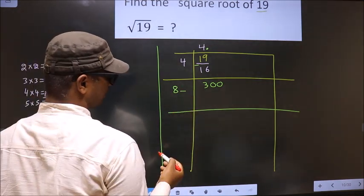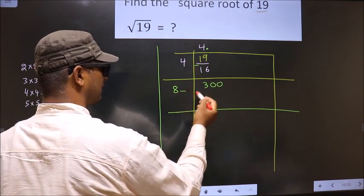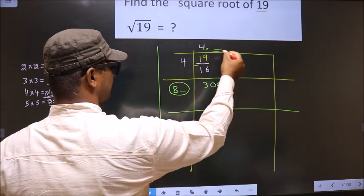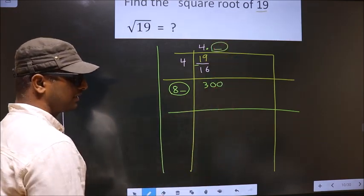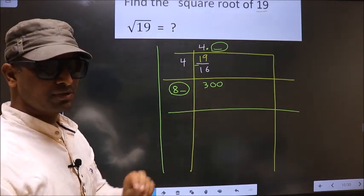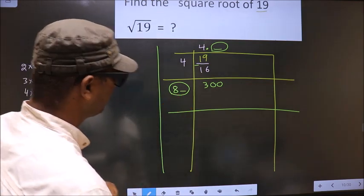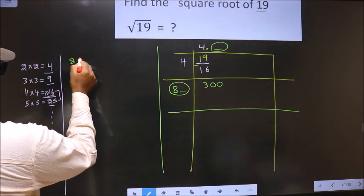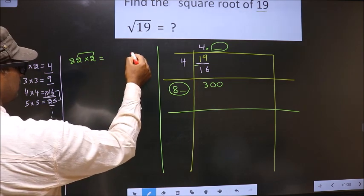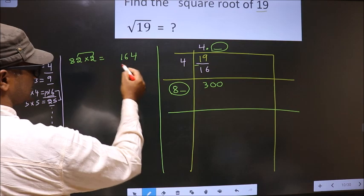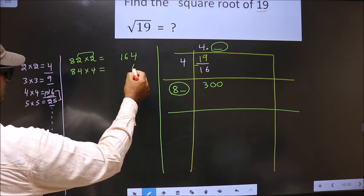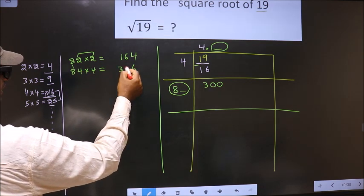Now I have to write a number here. The condition is: whatever number I write here, I should also write the same number in the divisor position. When you multiply this number by the combined divisor, the result should be either equal to or smaller than the current dividend, but not larger. If I take 2: 82×2=164, which is far from 300. If I take 4: 84×4=336, which is exceeding.